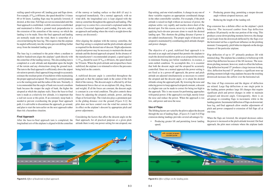If an extremely steep bank is needed to prevent overshooting the proper final approach path, it is advisable to discontinue the approach, go around, and plan to start the turn earlier on the next approach. On a normal approach with no wind drift, the longitudinal axis is kept aligned with the runway centerline throughout the approach and landing. The proper way to correct for a crosswind is explained in the Crosswind Approach and Landing section. For now, only an approach and landing where the wind is straight down the runway is discussed.